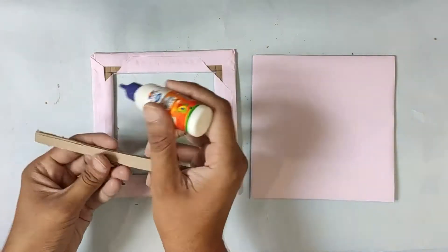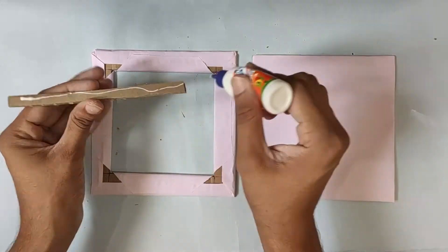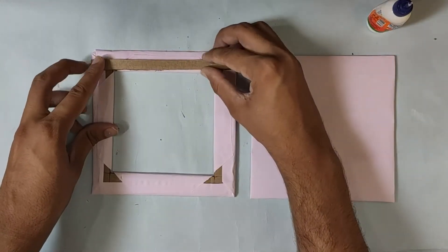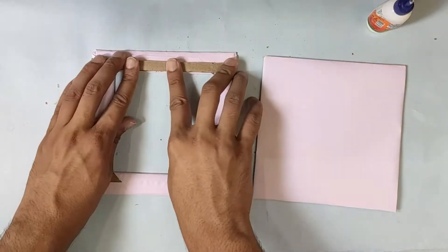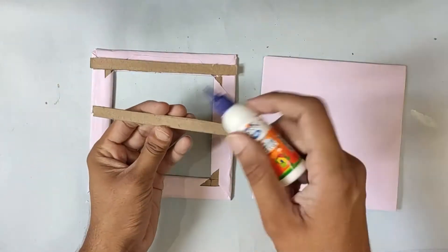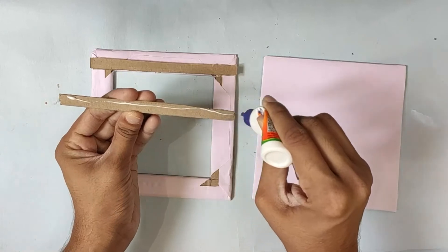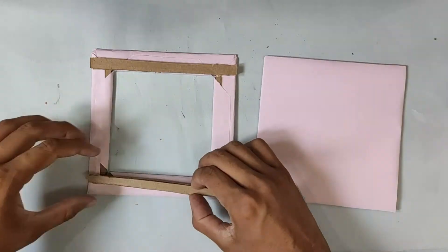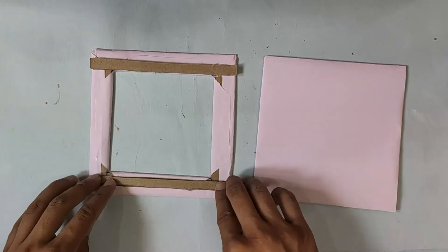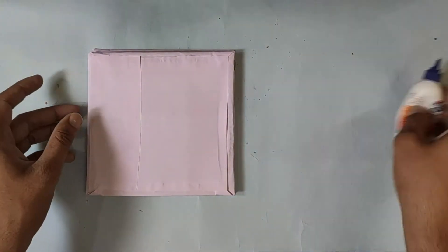Paste two thin cardboard strips as shown in video. Now paste the two cardboard pieces on top of each other as shown in video.